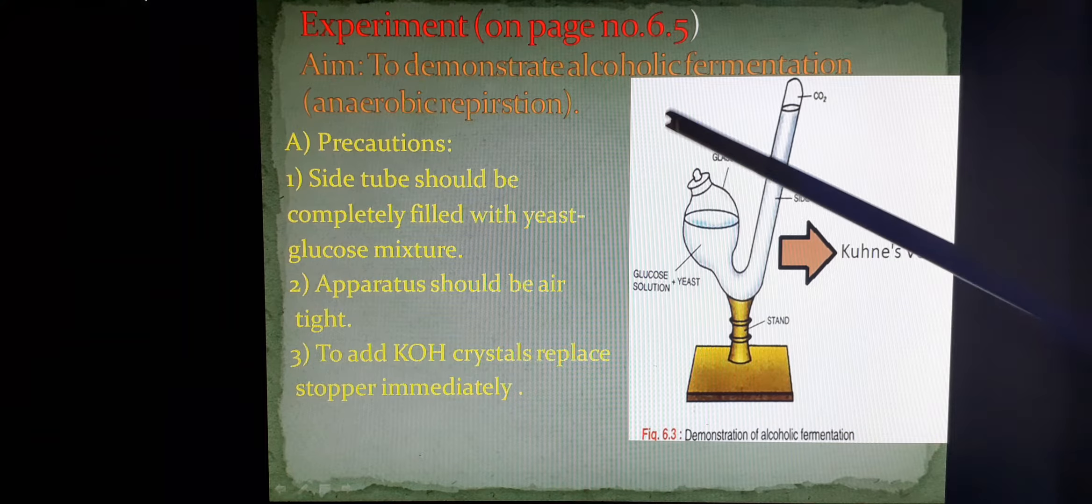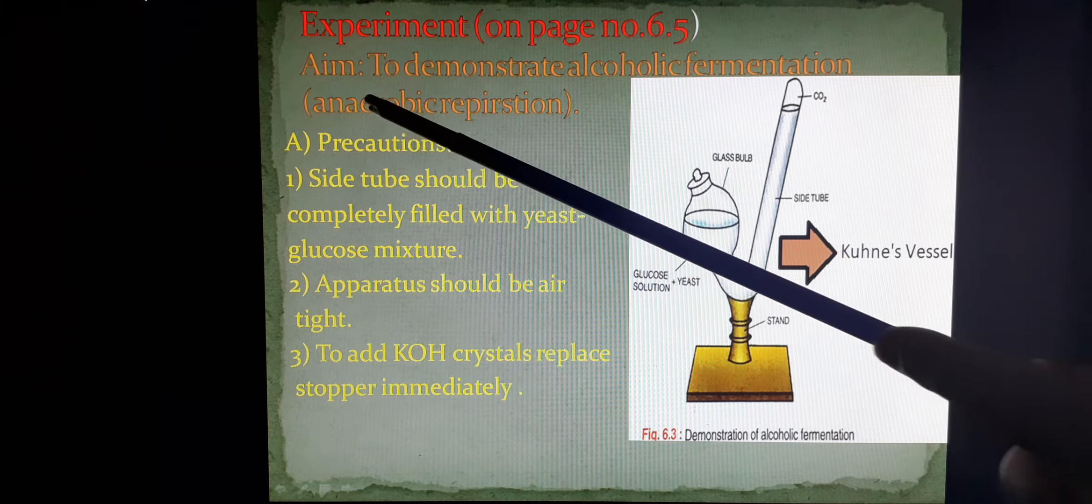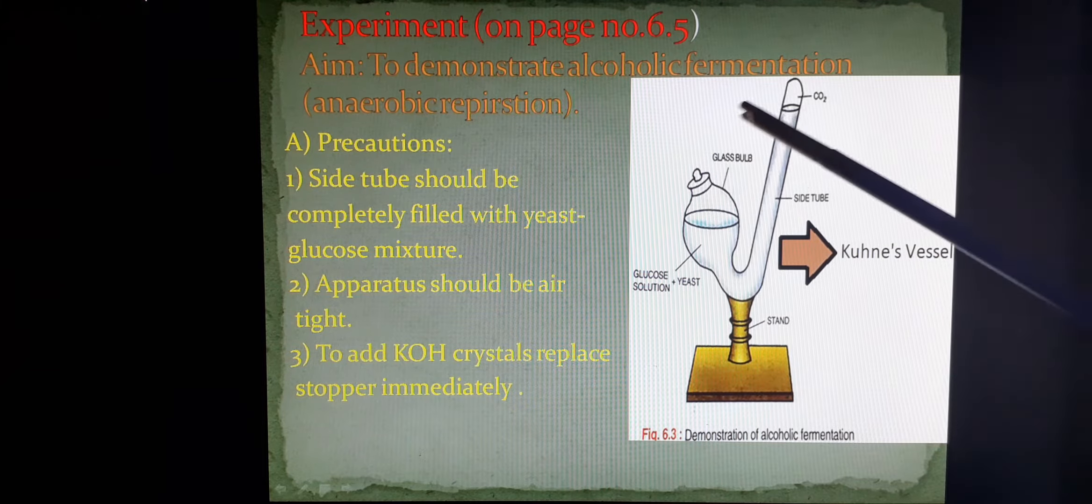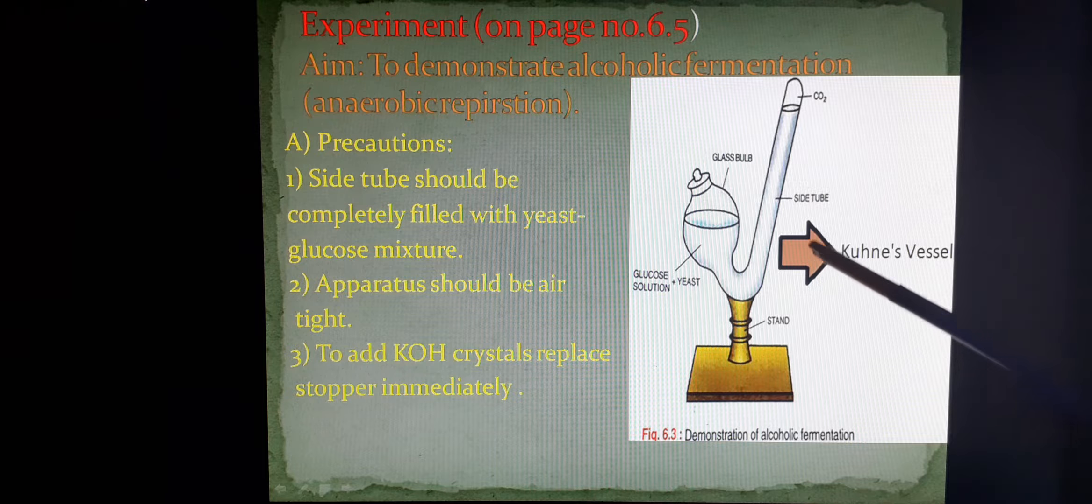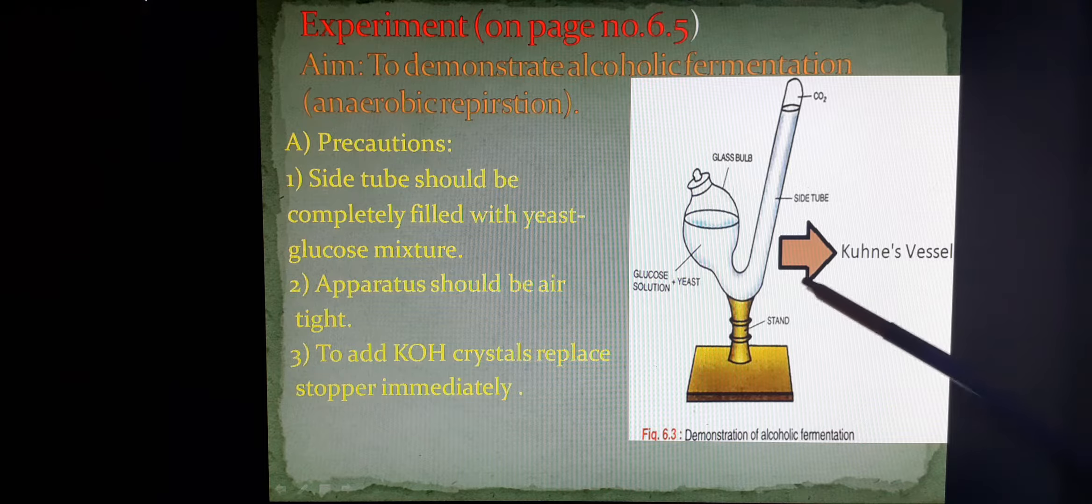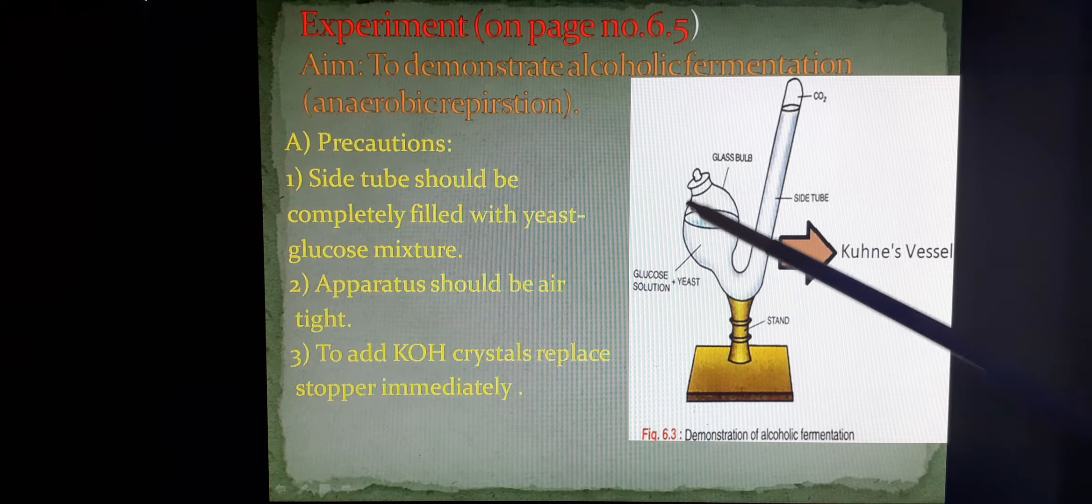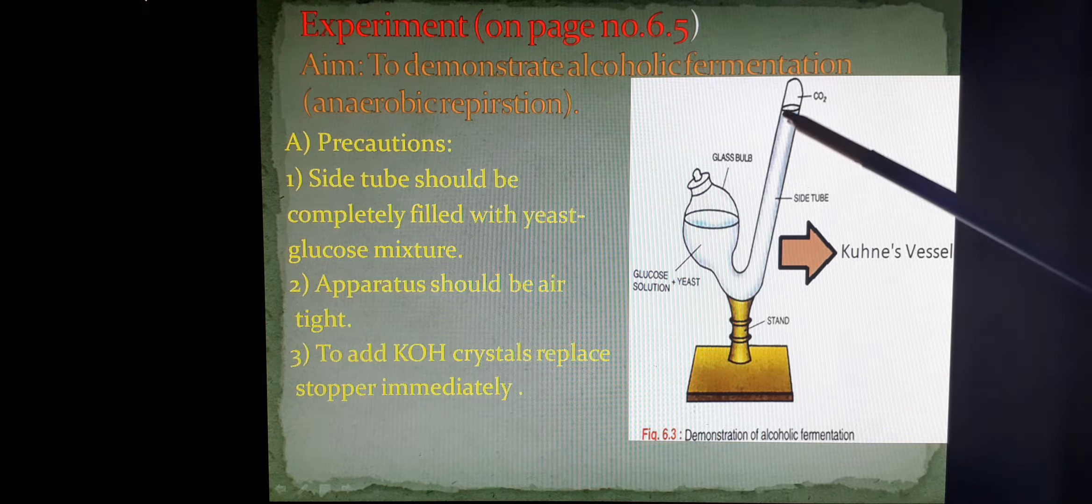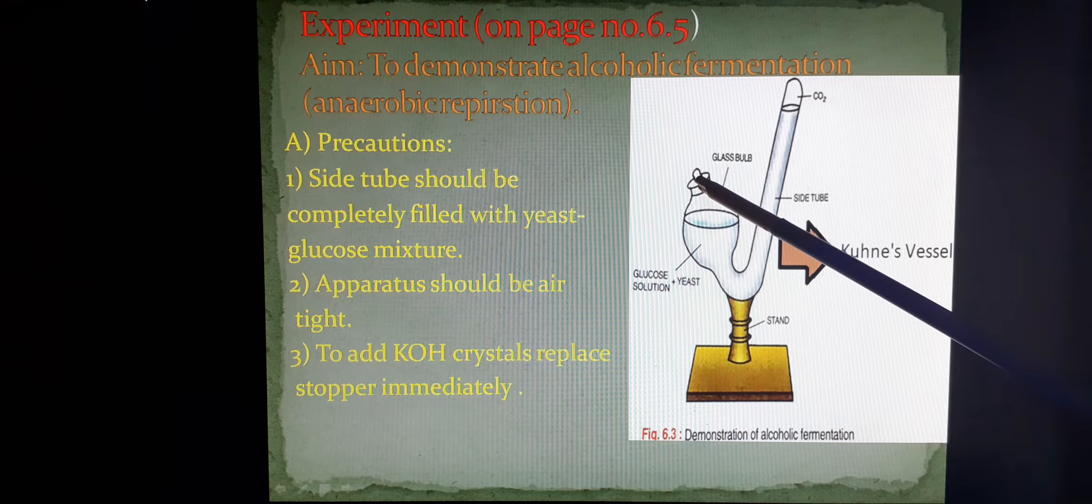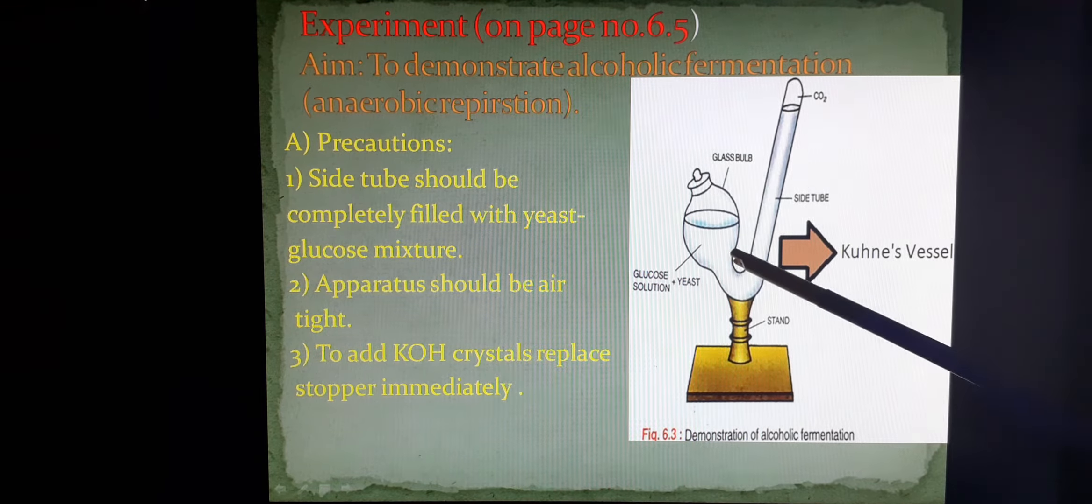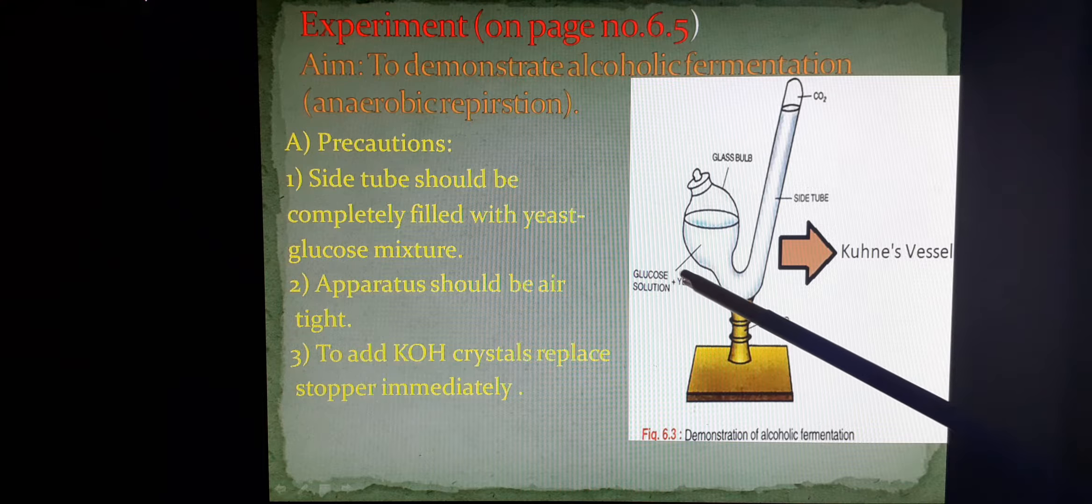In the second experiment, we are trying to discuss alcoholic fermentation, which is a phase of anaerobic respiration in plants. For this, we have taken a special vessel called Kune's vessel. Students, be very alert in learning the names of these vessels. This Kune's vessel is a bulb-like structure to which an inverted tube is attached, but this tube is sealed from this end and a stopper is placed at the opening of the bulb. In this apparatus, we are placing a special mixture prepared, which is 5% glucose along with yeast.